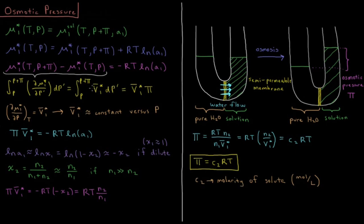If we assume the molar volume of the solvent is nearly independent of pressure — liquids are fairly incompressible, so water doesn't change its molar volume much over moderate pressure changes — we treat it as constant and pull it outside the integral. The integral from P to P plus π of dP is just P plus π minus P, so our result is V̄₁* times π: the molar volume of the pure solvent times the osmotic pressure.